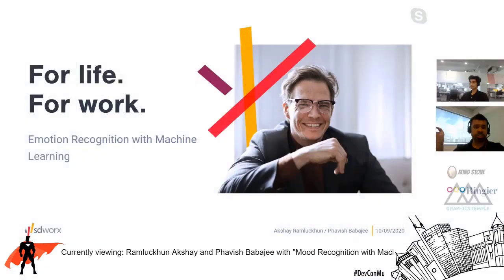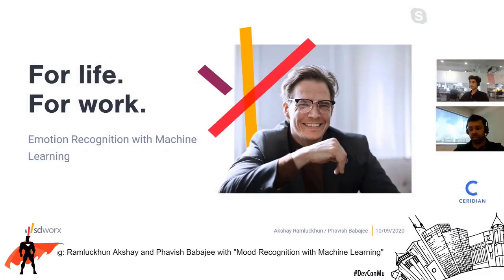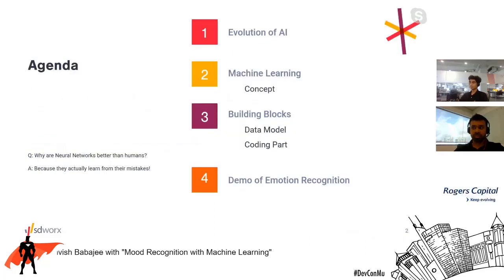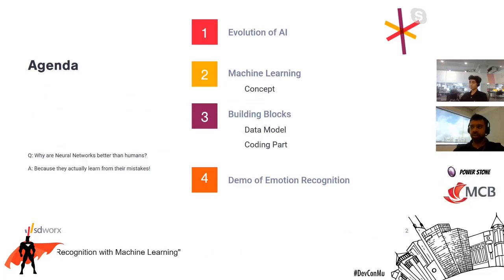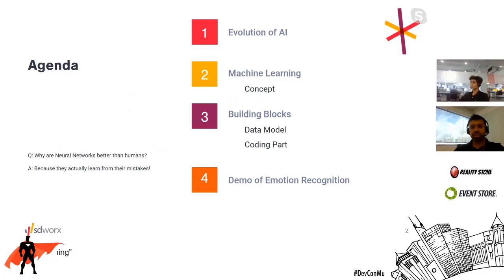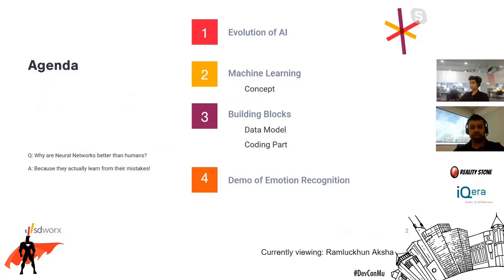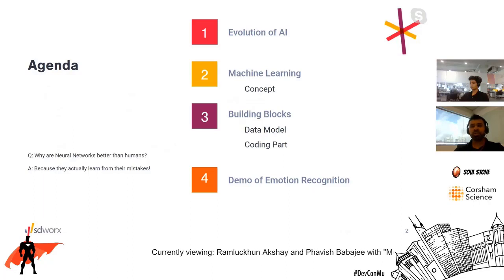Today, together with Pravish, I'll be showing you the mood recognition with machine learning that we made. For today's agenda, we have first the evolution of AI — to find out what we did with AI since ages — the concept behind machine learning and the building blocks behind a data model, the coding part that our code monkey will demo, and finally the emotion recognition demo itself with seven different moods that we have developed.